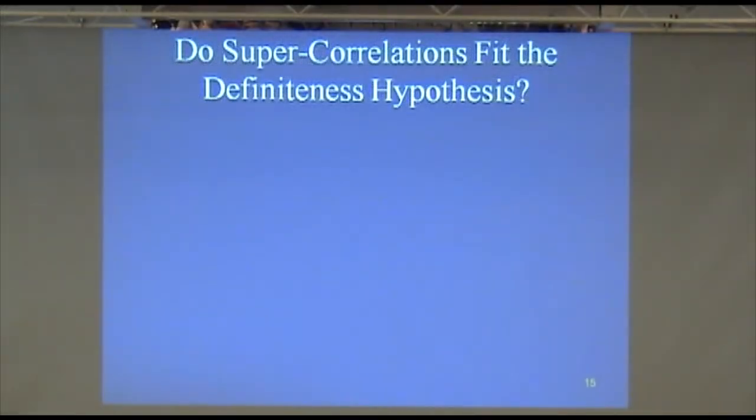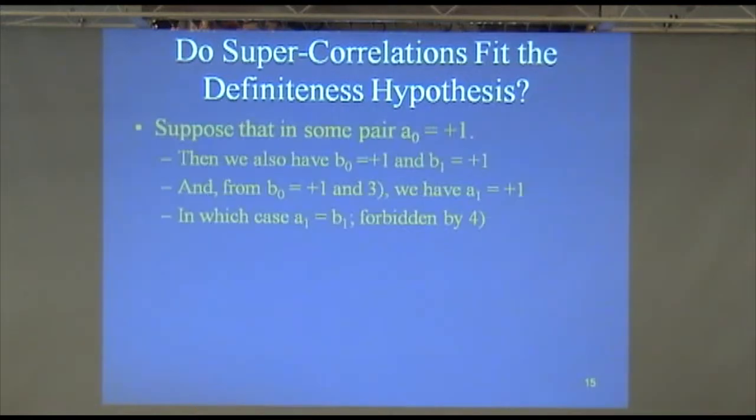So, can we fit the correlations, the super correlations, into the definiteness hypothesis? Well, Alice has one of these particles, Bob has his partner, they've got one of these pairs, so let's ask a question. Suppose that Alice's particle has a definite A0 value of plus 1.